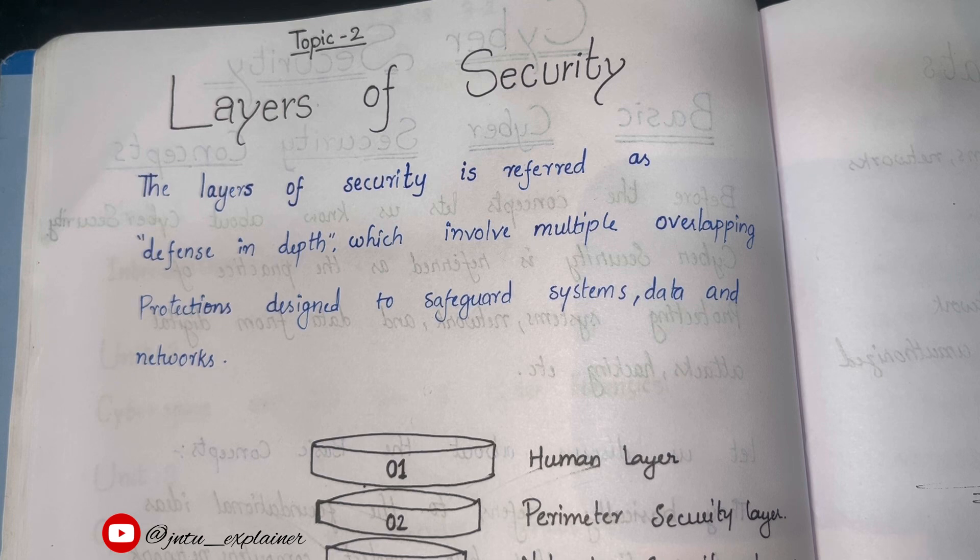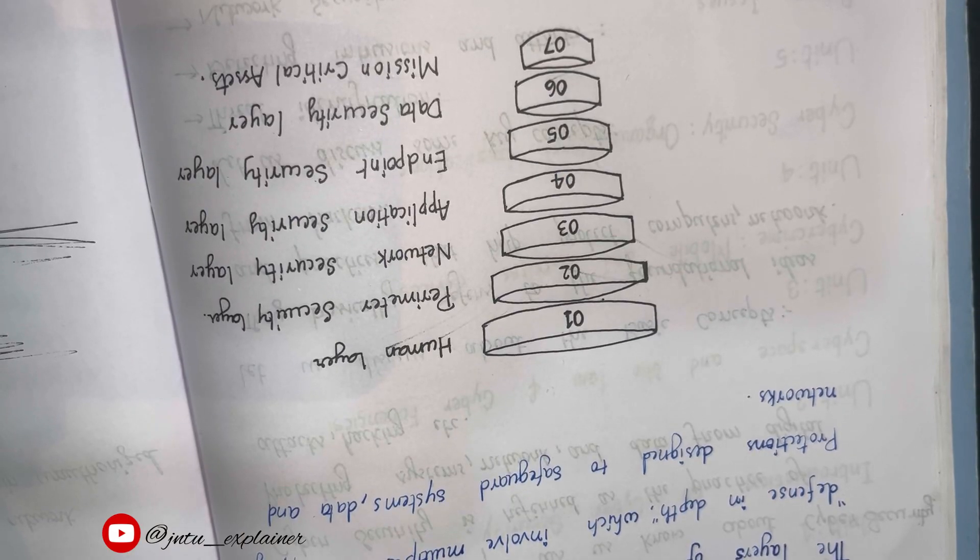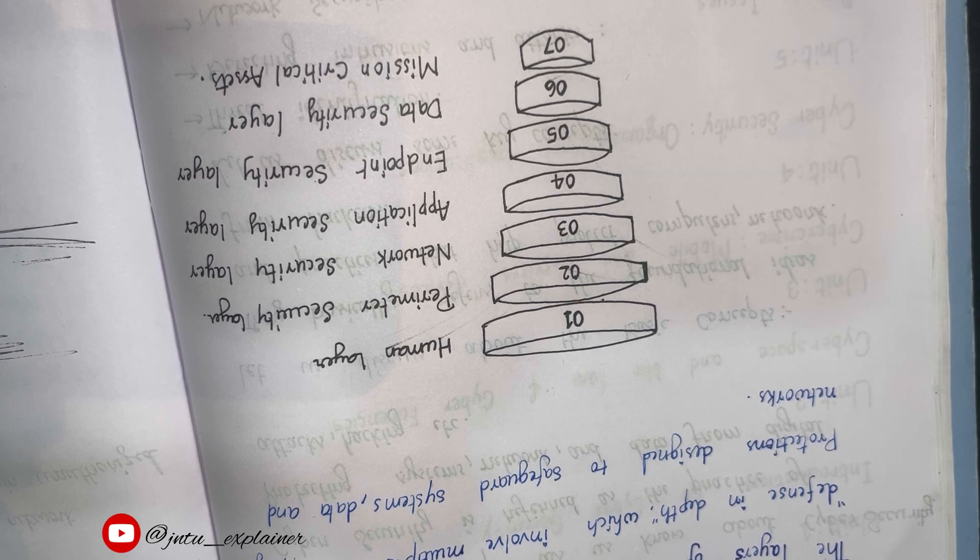Which involves multiple overlapping protections designed to safeguard system. That means all the layers of security are overlapped one by one. Any type of malicious code has to reach the system or data through crossing each layer of this.